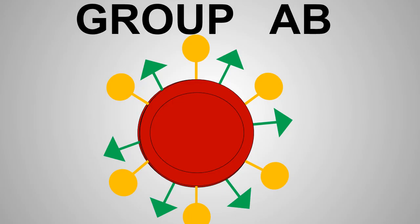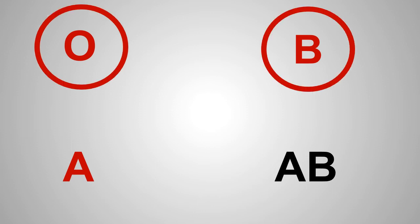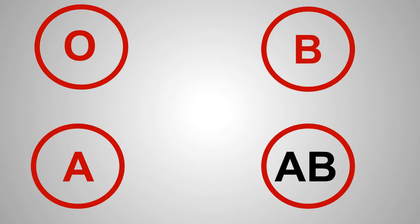Group AB has both A and B antigens and has no antibodies. It means they can receive blood from people in any ABO group, and they can only give blood to people in group AB.